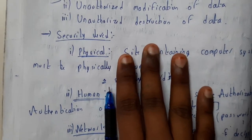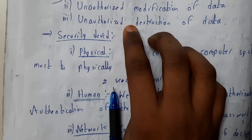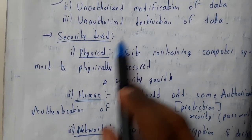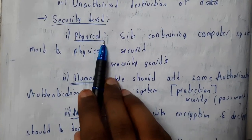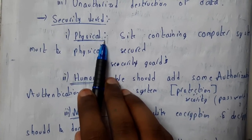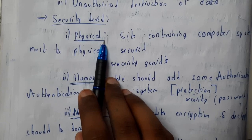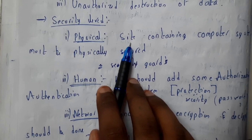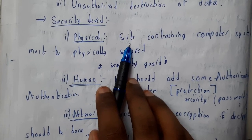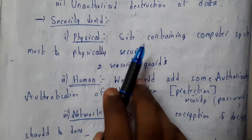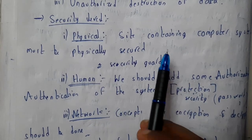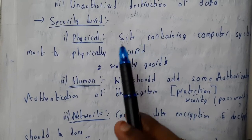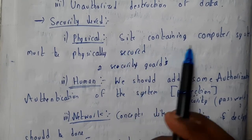There are four security levels. The first is physical security — a security guard or human being takes care of the device. This is mainly seen in banks, IT companies, and research centers, where guards are appointed to secure systems and prevent outsiders from entering.